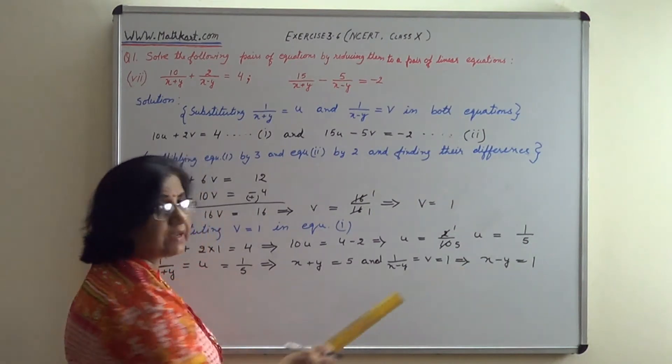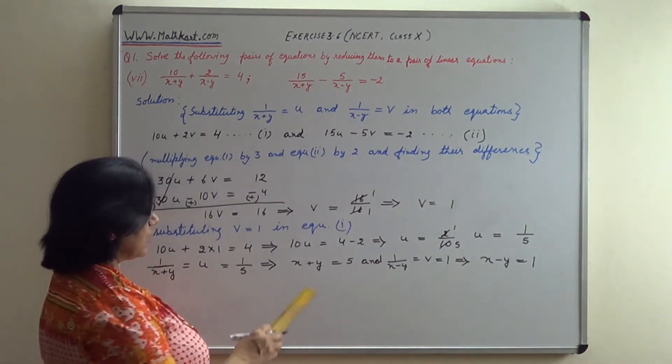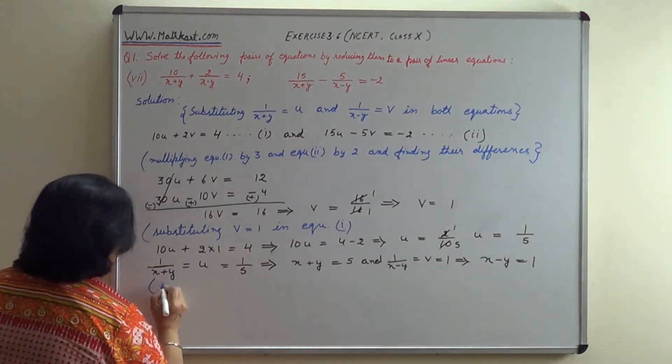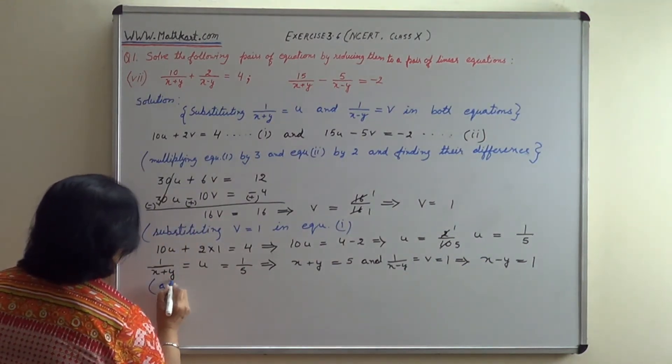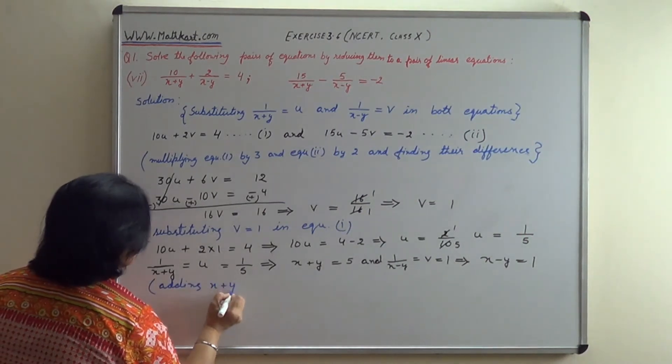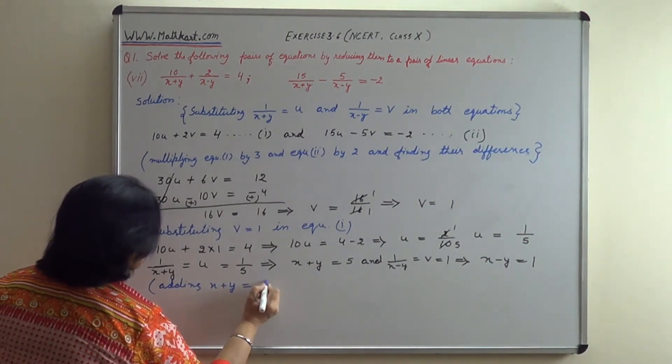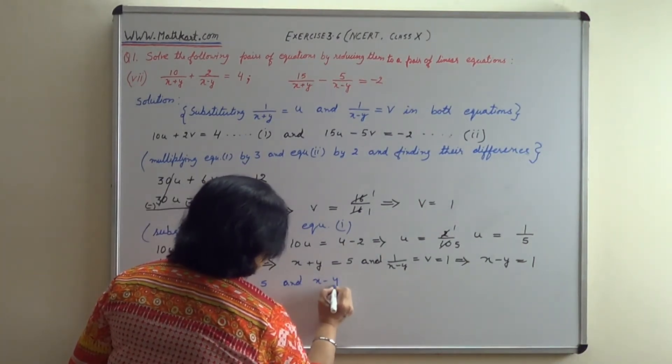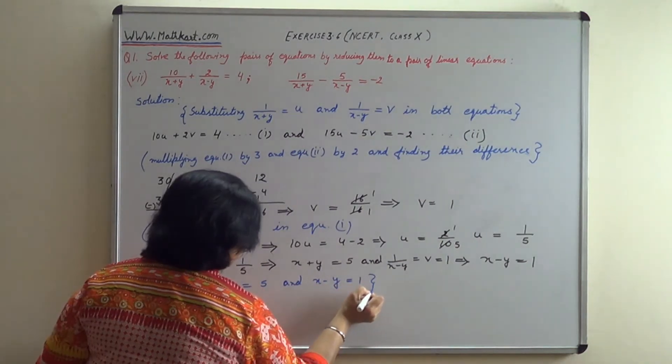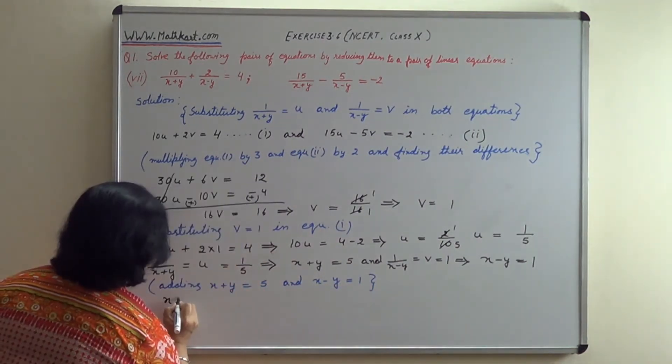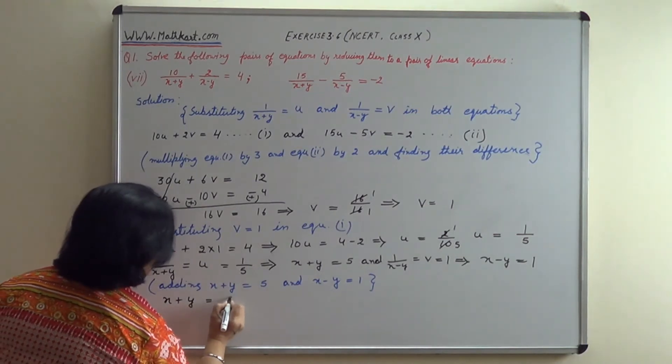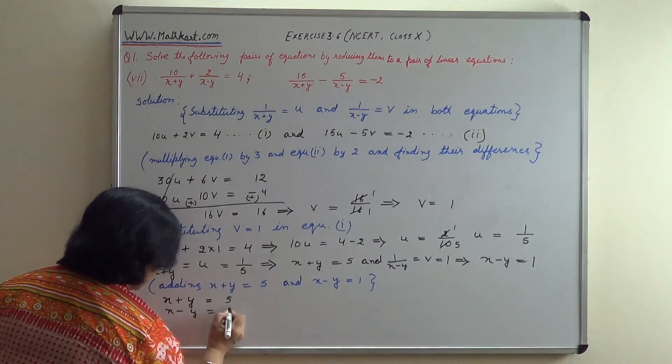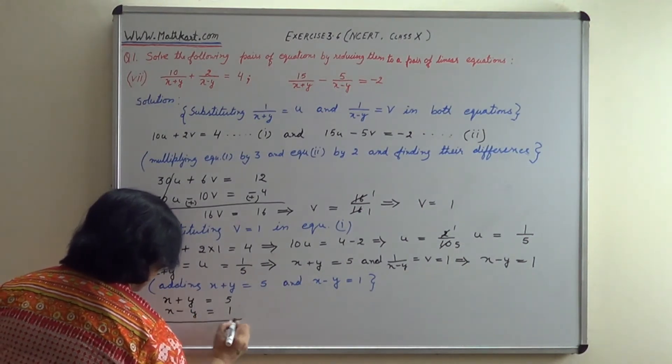Now we have x plus y equals 5 and x minus y equals 1. We'll add these equations to find x.